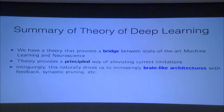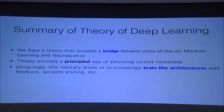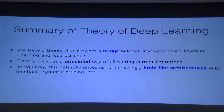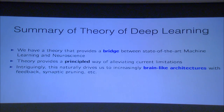The summary of this theory is that it tries to explain what convolutional nets are. One of the main implications is to build a bridge between neuroscience and deep learning, and it hopefully provides a principled way to alleviate a lot of the limitations of convolutional nets. One intriguing insight is that as we try to alleviate some of these limitations, we're finding that we're basically starting to reproduce more and more features of actual brains. Introducing feedback connections, doing synaptic pruning — these kinds of things that happen in our brains — we're actually finding reasons why we would want to include them in order to improve upon convolutional nets.